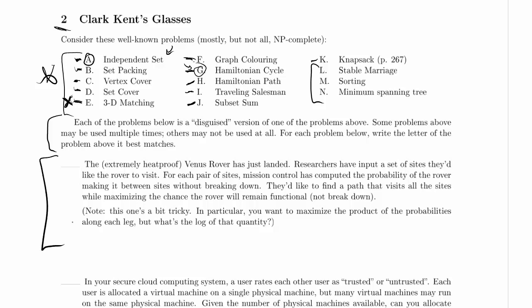Let's move on to the first part of problem two. We'll start by reading the problem. The extremely heat-proof Venus rover has just landed. Researchers have input a set of sites they'd like the rover to visit. For each pair of sites, Mission Control has computed the probability of the rover making it between sites without breaking down, and they'd like to find a path that visits all the sites while maximizing the chance the rover will remain functional, that is, not break down.